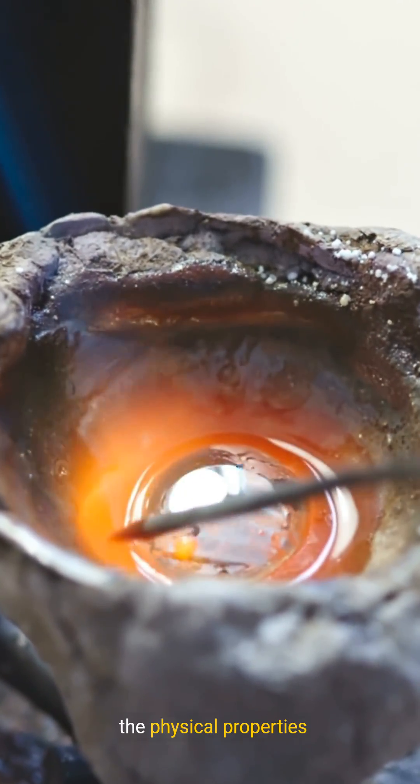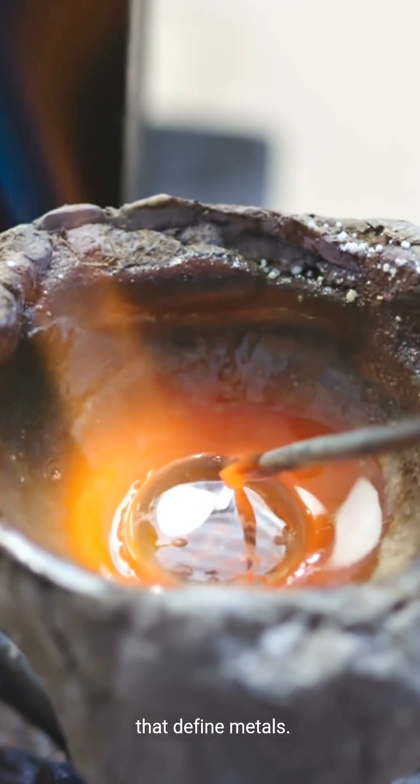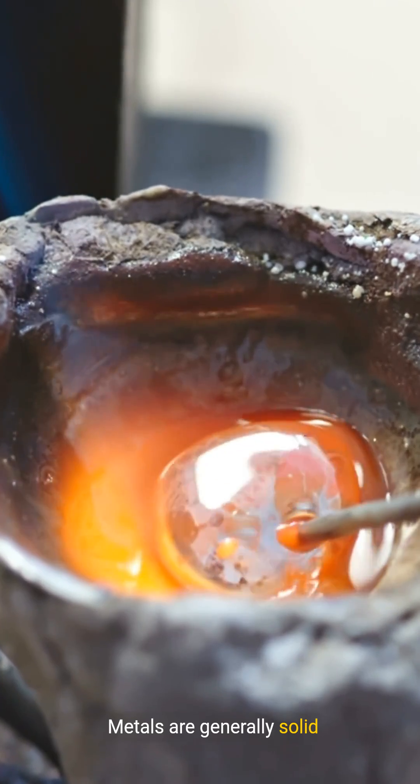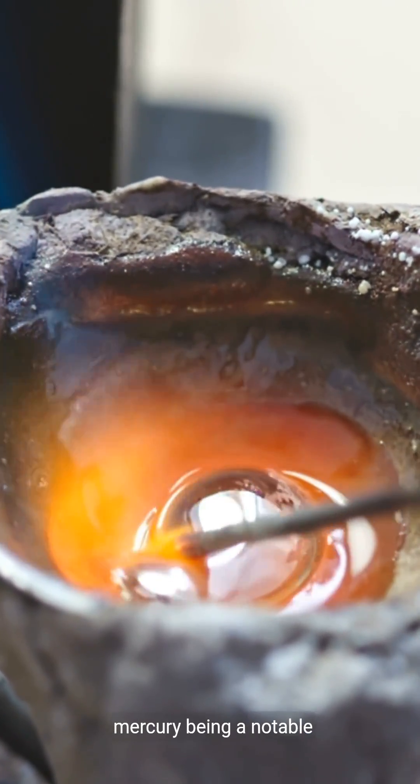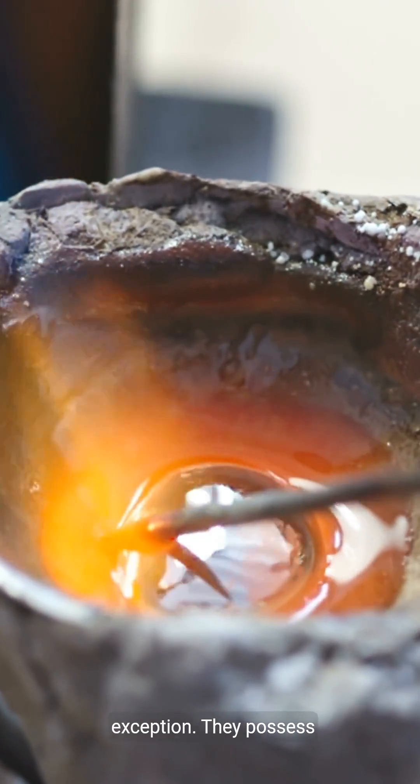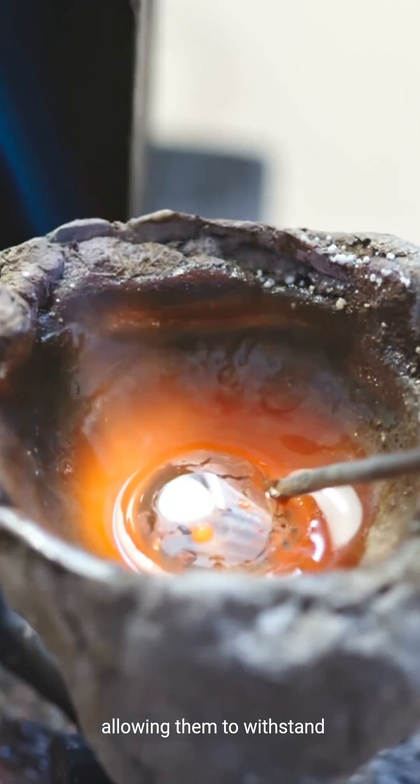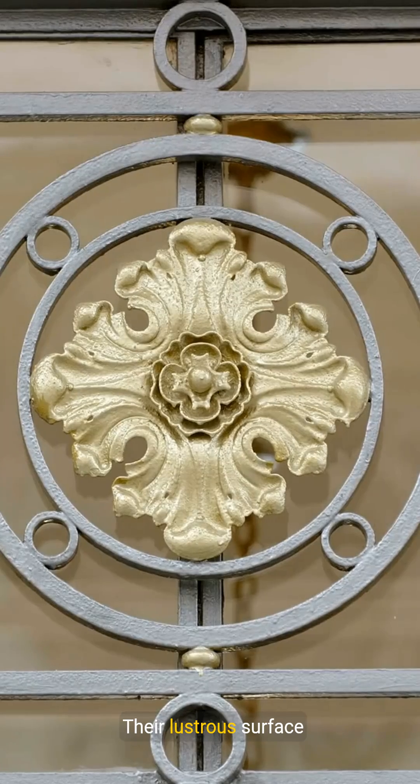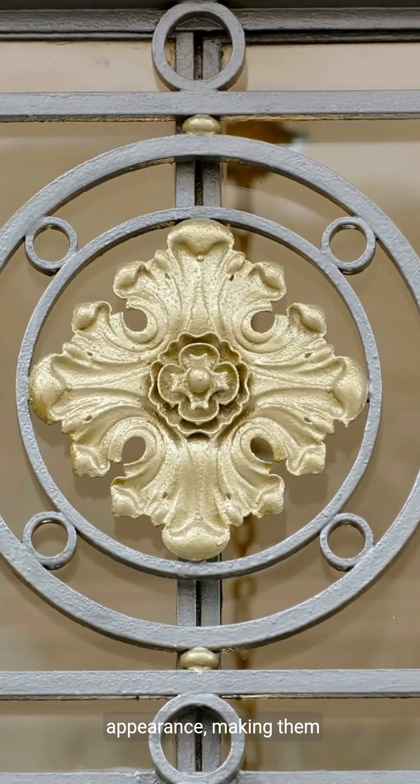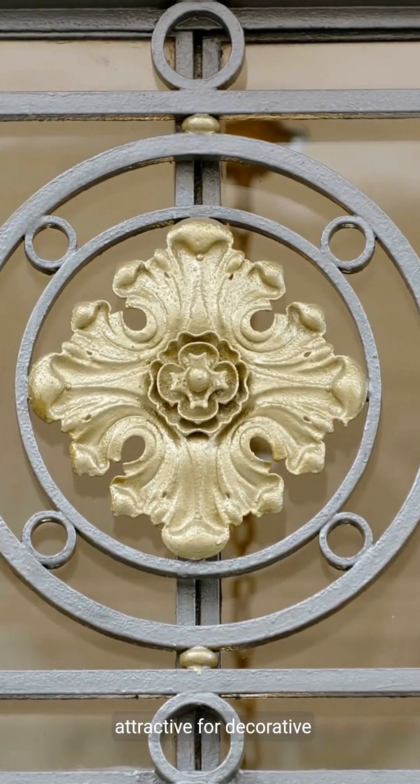To start, let's explore the physical properties that define metals. Metals are generally solid at room temperature, with mercury being a notable exception. They possess high melting points, allowing them to withstand extreme heat. Their lustrous surface gives them a shiny appearance, making them attractive for decorative uses.